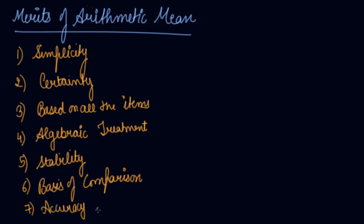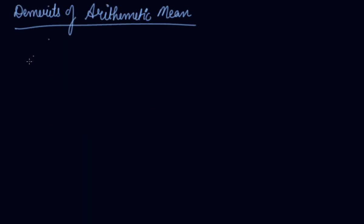The seventh merit is accuracy test: the arithmetic mean can be tested for its accuracy as the representative value of the series or the statistical data. So these are the merits of arithmetic mean.